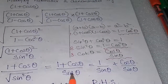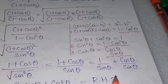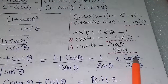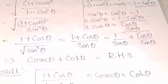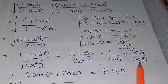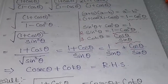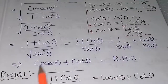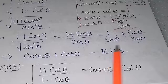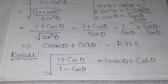Since 1/sinθ = cosecθ and cosθ/sinθ = cotθ, the expression equals cosecθ + cotθ, which is equal to RHS. Hence proved. The square root of (1 + cosθ)/(1 - cosθ) is equal to cosecθ + cotθ.